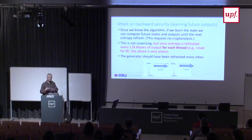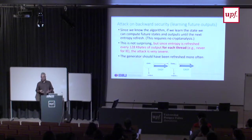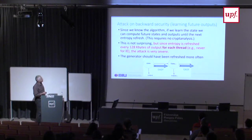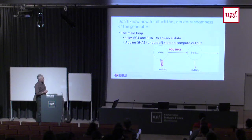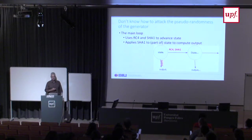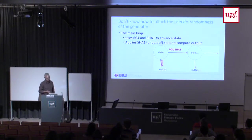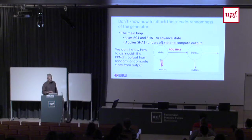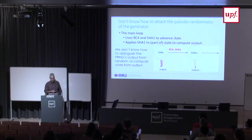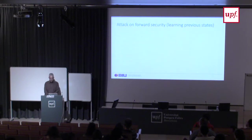If someone breaks in and gets the current state, they can compute all future state steps. It's not hard to get the state because it's kind of in application area, not hidden inside the kernel. This is problematic because the refresh only happens after 128 kilobytes for this specific thread, which means it never happens for many important applications. So you go for a coffee break, someone breaks into your machine and gets the state — that's the end until you restart your computer. We don't know how to break the pseudorandomness of the generator, but we do have an attack on forward security.